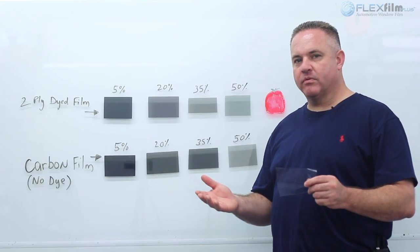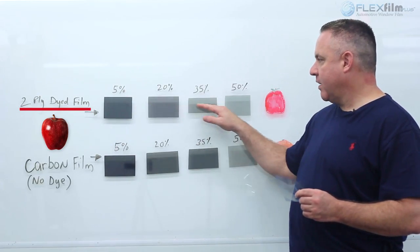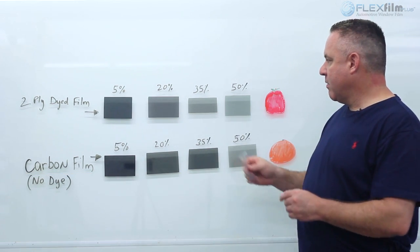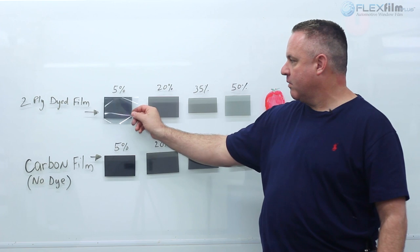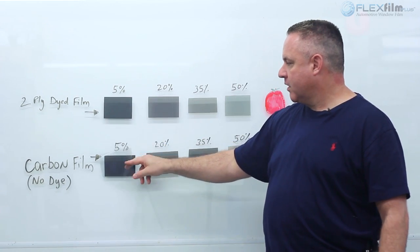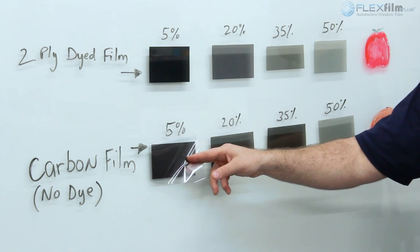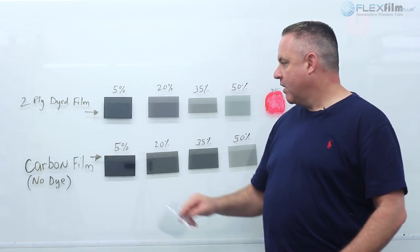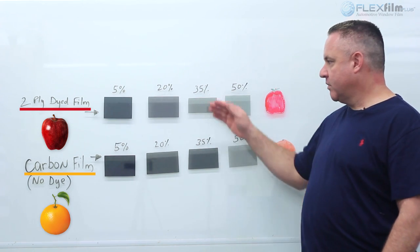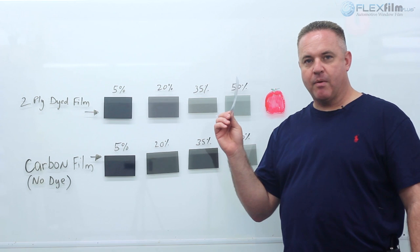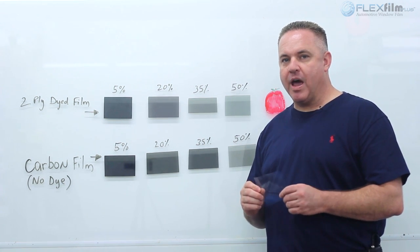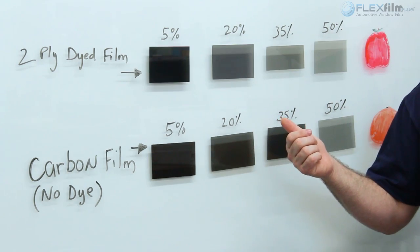Let's review. We have dye film here and carbon film here. What we're doing is taking dyed film and pairing it with a nano ceramic material to get an apple, or taking carbon film and pairing it with a nano ceramic material to get an orange. There are two different methods of hybrid ceramic technology. Now I'm going to show you what happens when we put a meter on this — it's pretty cool.